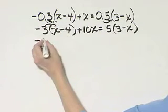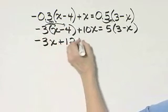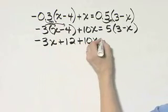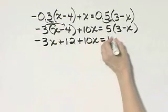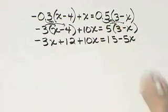That's negative 3x plus 12 plus 10x is equal to 15 minus 5x. Again, using the distributive property.